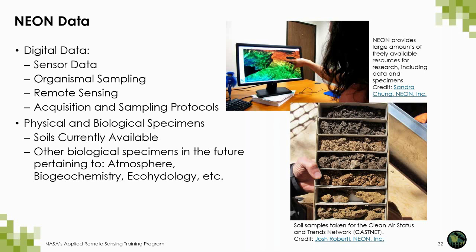Anyone can access NEON data products as they become available. All digital NEON data products are available through the NEON data portal. Types of digital data include sensor, sampling, and remote sensing data and their associated metadata, as well as sampling protocols and procedures. Biological specimens are being collected, imaged, and cataloged and stored. Digital images and physical specimens will also be available in the future. Currently, only the soils data are available and can be accessed via a request submitted by a researcher.